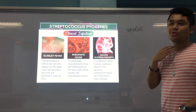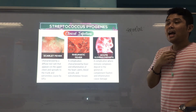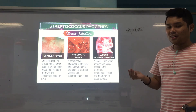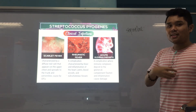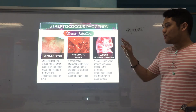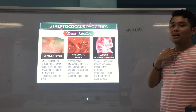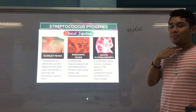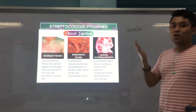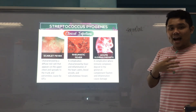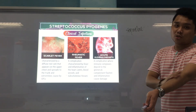Rheumatic fever typically occurs after a throat infection (pharyngitis) caused by Strep pyogenes. If the infection is not treated promptly, antibodies meant to attack streptococcal antigens in the throat will cross-react with antigens found in the heart — leading to inflammation of the heart, joints, and blood vessels. Rheumatic fever does not typically occur after skin infections — only after throat infections.